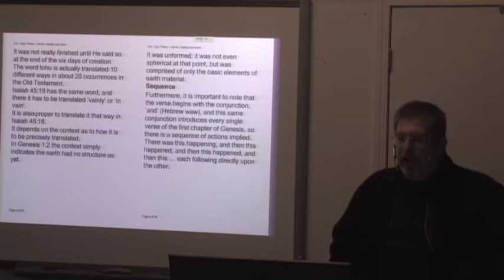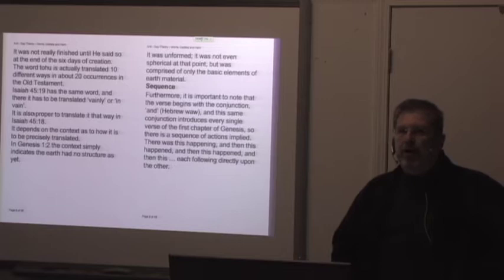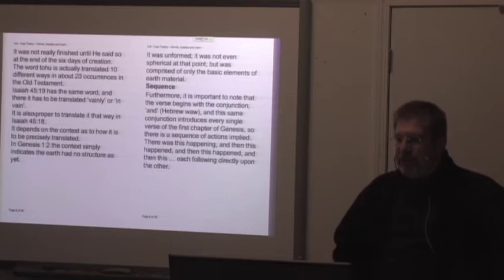This one may not be so obvious, but we will look at Isaiah 45:18 later and see what the real context is. It was not really finished until he said so at the end of the six days of creation. The word tohu is actually translated 10 different ways in about 20 occurrences in the Old Testament. Just as an aside here, note that he keeps talking about translations, typically the King James Version translation, because later he's going to argue against the King James Translation as evidence for the gap. But I found it interesting that he'll say, well, it's been translated this way, therefore it must be correct. And then later he said, well, it was translated this way, but that's wrong. Isaiah 45:19 has the same word, and there it has to be translated vainly or in vain.